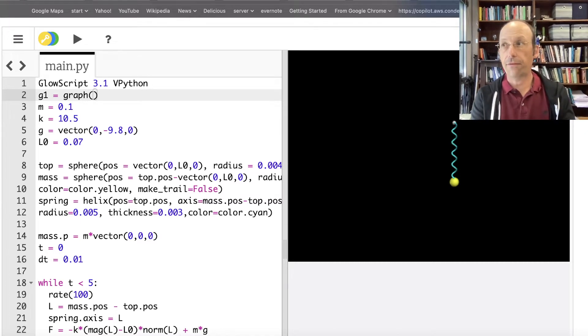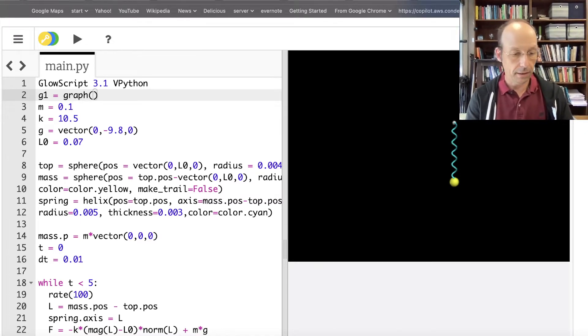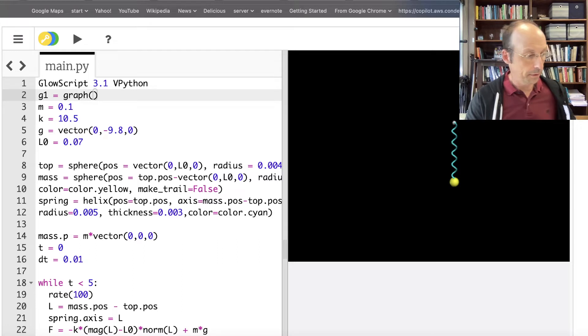So G1 is equal to object type graph built into Python. You don't have to declare that. So it's a graph, and I'm just blanking out here for a second. The paper is bothering me. So I'm going to need to get an X title. Let's say it's time for now. We'll change that.